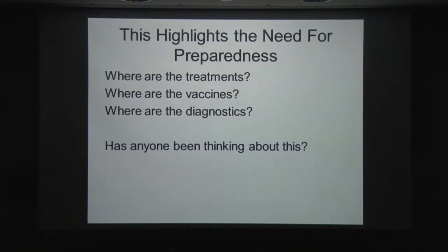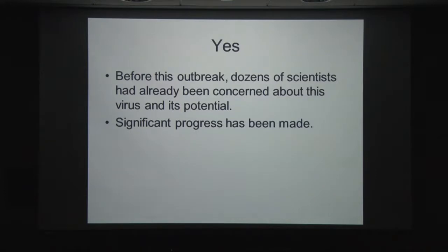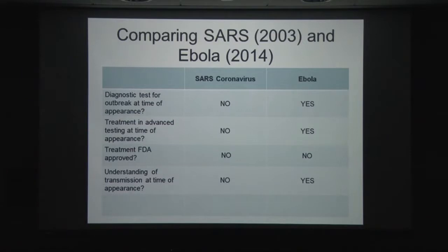When these outbreaks happen, all of a sudden people want answers to very specific questions: where are the treatments? Where are the vaccines? Where are the diagnostics? And why are they not on the shelf? The underlying question is, why hasn't anybody been thinking about this? One of the reasons I'm here is to say that actually people have been thinking about this. Before this particular outbreak, dozens of scientists had already been concerned and working on it, and significant progress has been made — and that is in large part thanks to the American taxpayer.